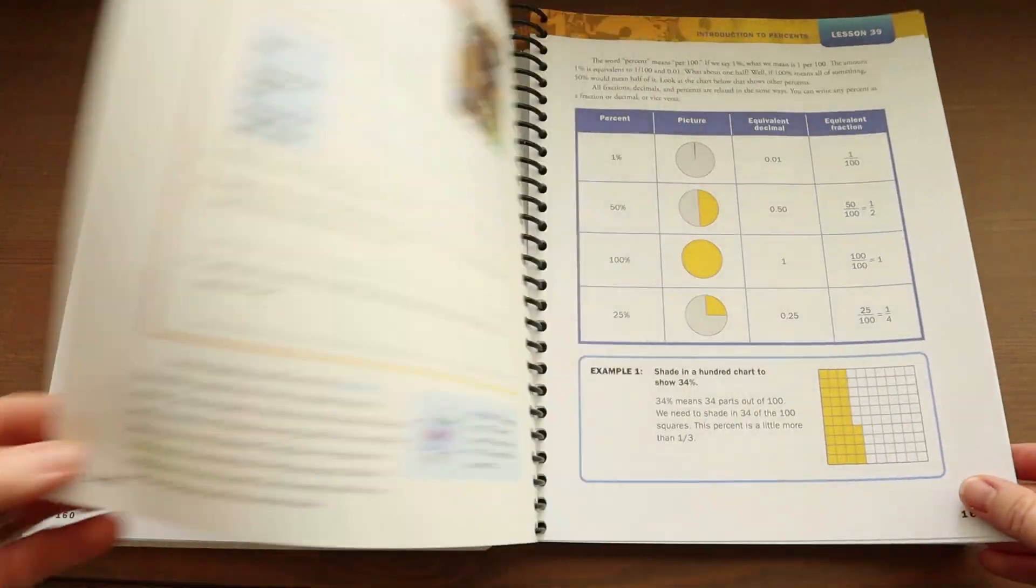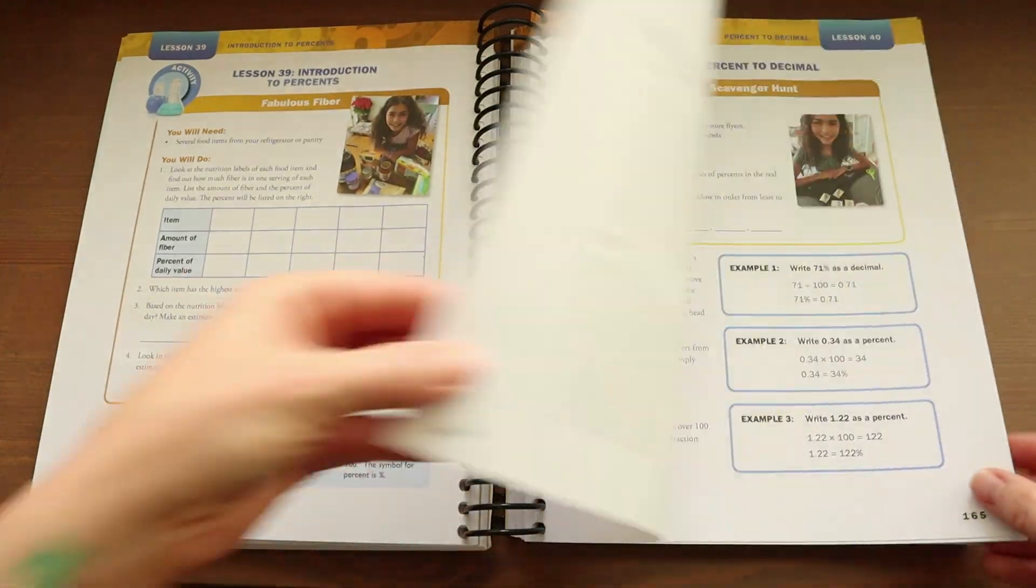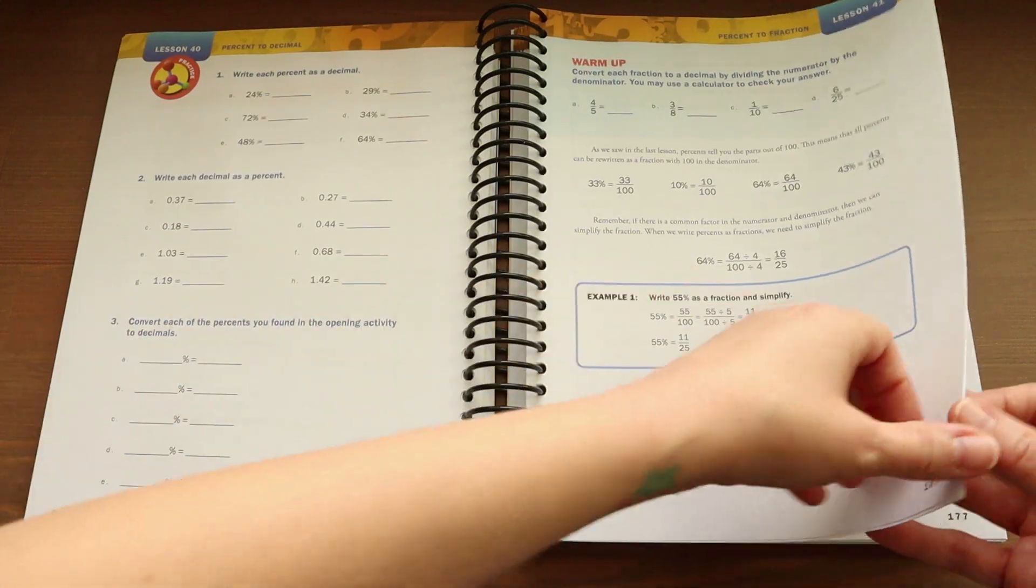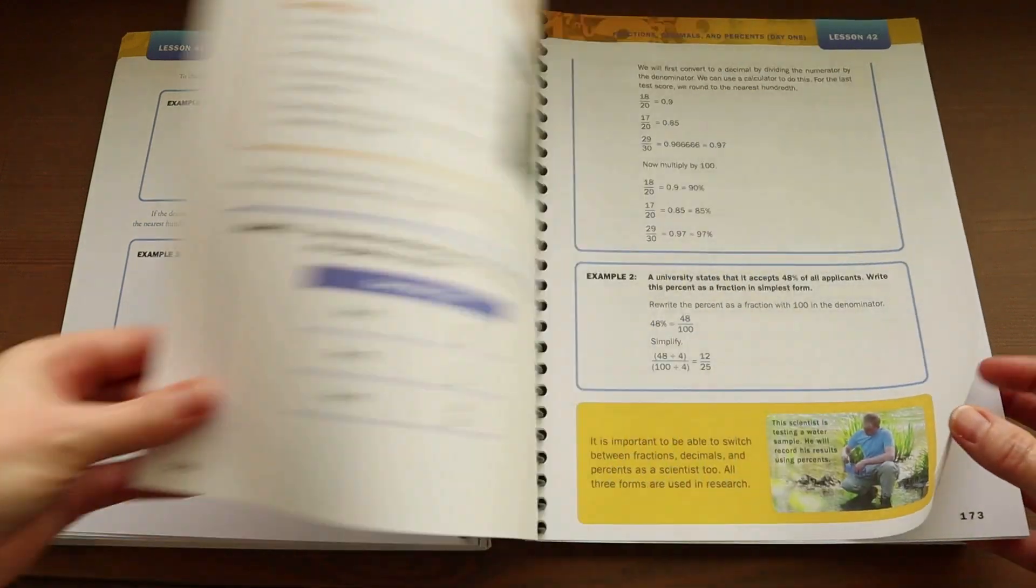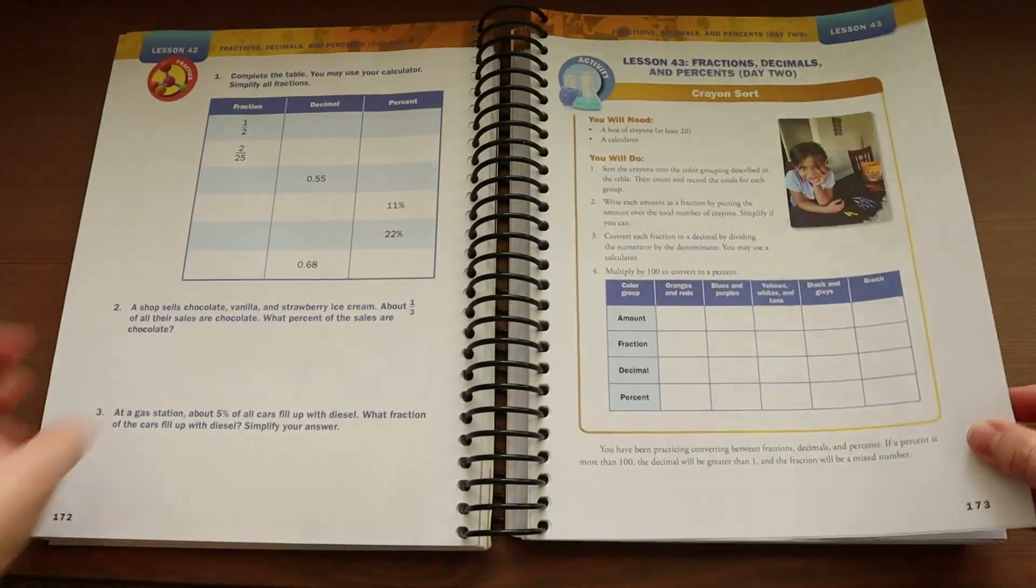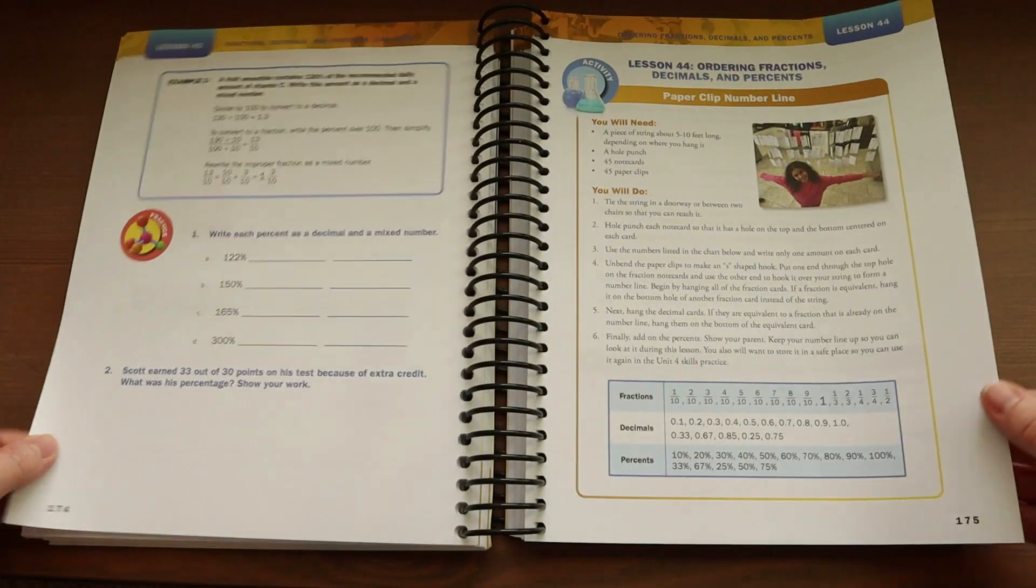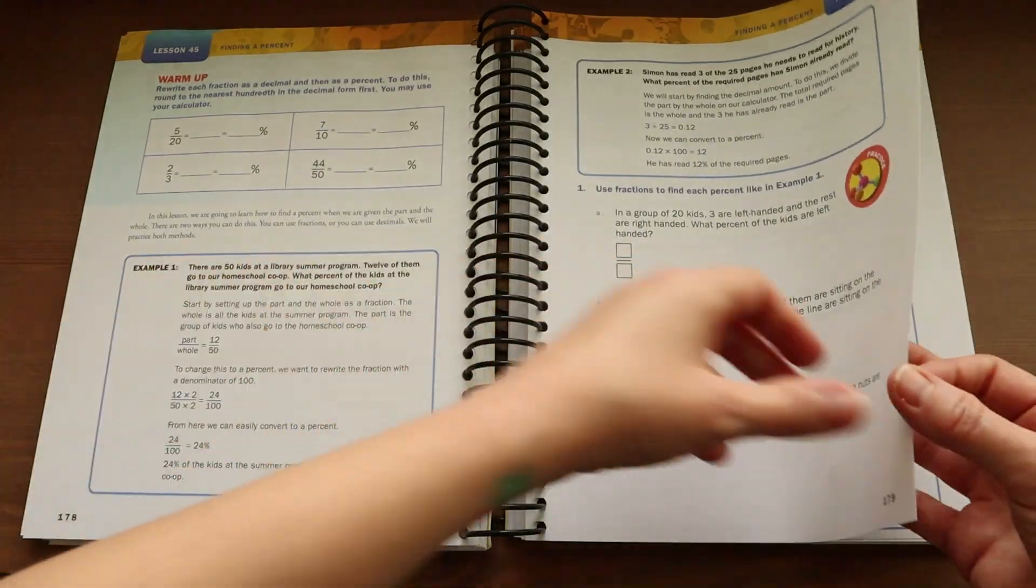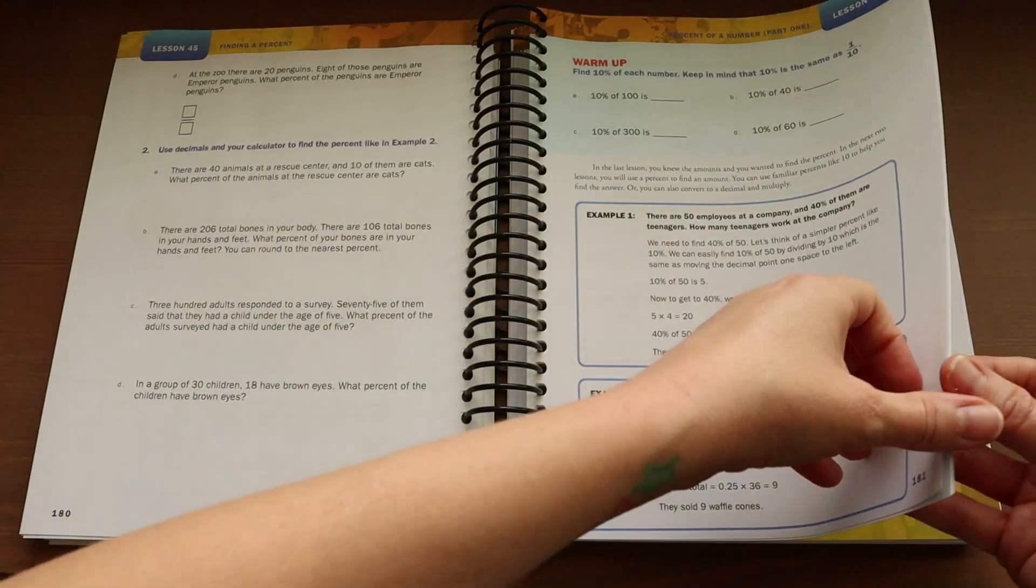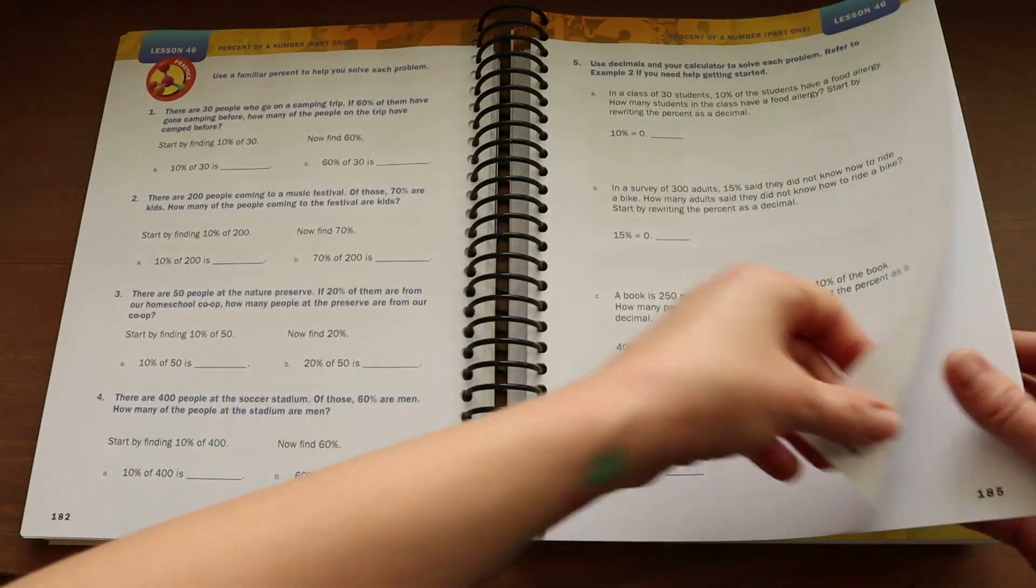Now prior to each lesson you should set aside about five to ten minutes for skills practice. This can be found at the beginning of every unit in the teacher's guide and it will walk you through what skills to be practicing and give you some fun and creative ideas on how to practice them as well as what you were looking for your child to have mastered.